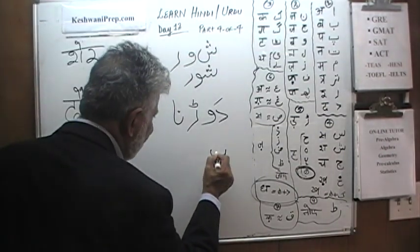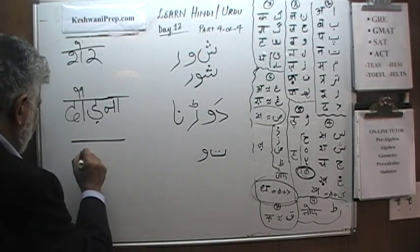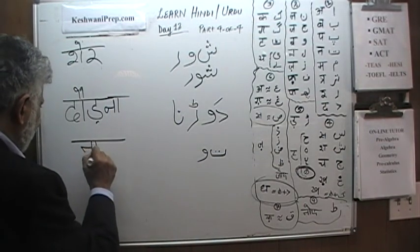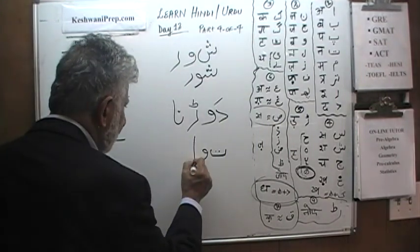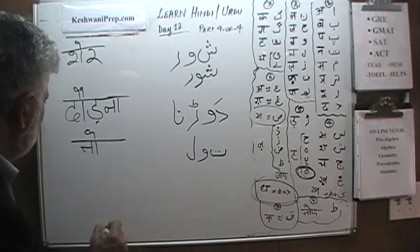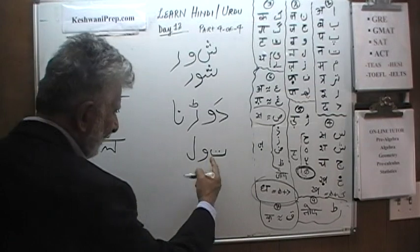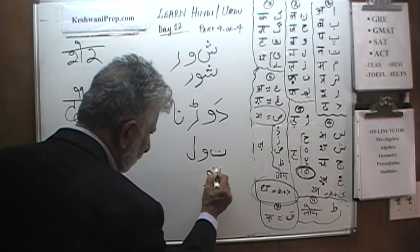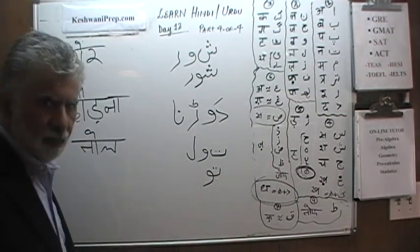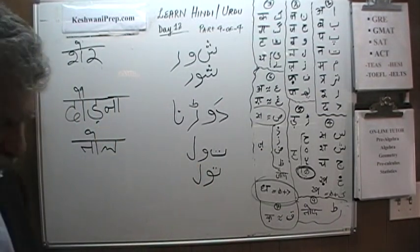Let's do one last one. Here's our Ta, to which we're going to join Vav — so that makes a To. Then it has one more letter, a Lam — To, Lam. Tolna as in to weigh something. How do we combine them? Very simple — just make it smaller and continue, put a Vav next to it, that's the To, and the Lam stays by itself. Tolna — to weigh something.